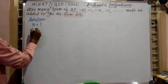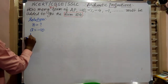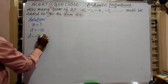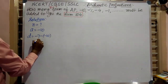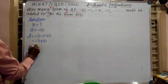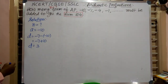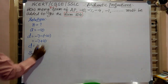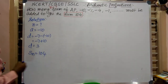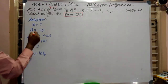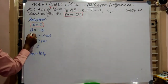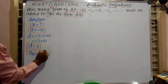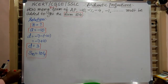First term, A is equal to minus 10. Common difference D is equal to minus 7 minus of minus 10, that is minus 7 plus 10, that is equal to 3. So common difference D is equal to 3. And Sn is equal to 104. These are the given data: N is equal to question mark, A is equal to minus 10, D is equal to 3, and sum of nth terms is equal to 104.